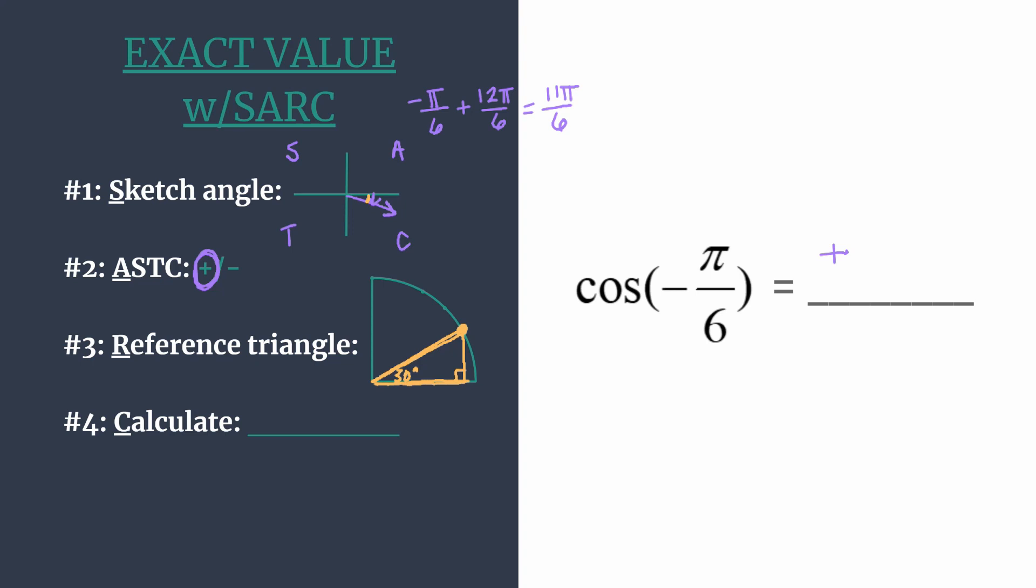You can see that the long leg is the horizontal leg, so our x-coordinate will be root 3 over 2. And then the shorter leg is the vertical leg, so the y-coordinate will be 1 half. And now we can use these coordinates in step 4 to calculate our ratio.